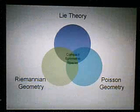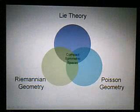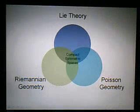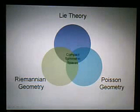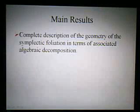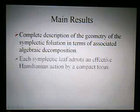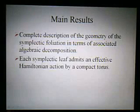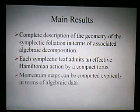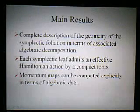The point of this paper is to study the relationship between the algebraic structure of the compact symmetric space and a very special homogeneous Poisson structure on it. The geometry of the symplectic foliation is described explicitly and related to an algebraic decomposition of the symmetric space. The main result is that each symplectic leaf admits an effective Hamiltonian action by a compact torus, and the momentum map can be computed explicitly in terms of the algebraic decomposition.